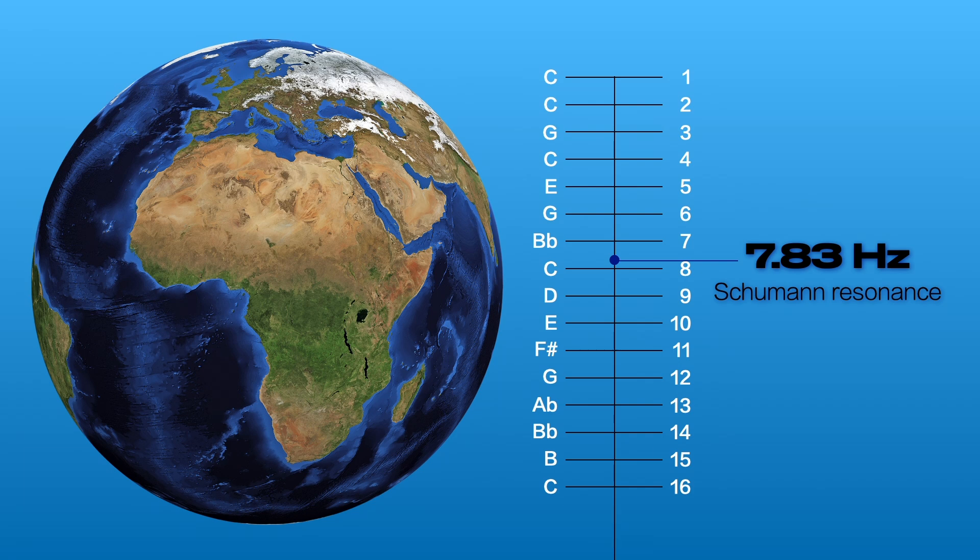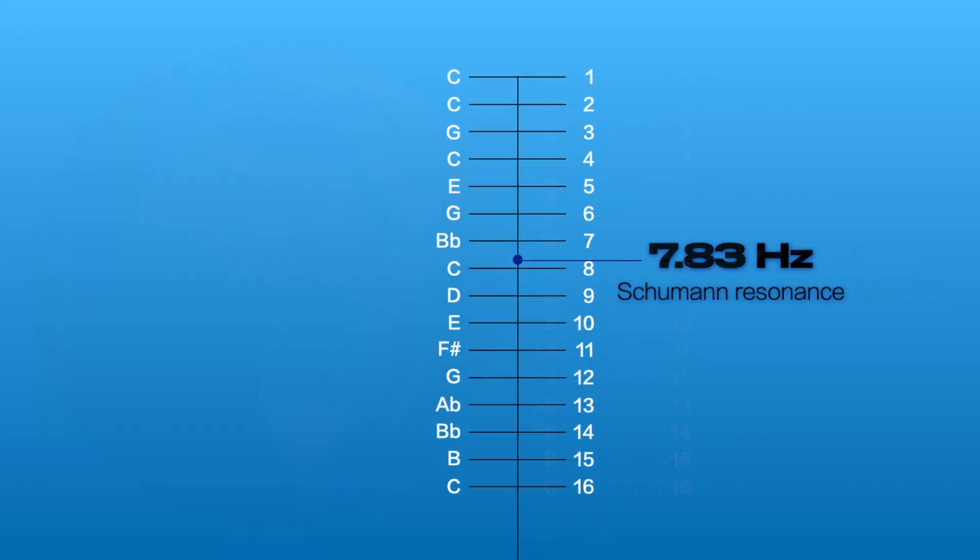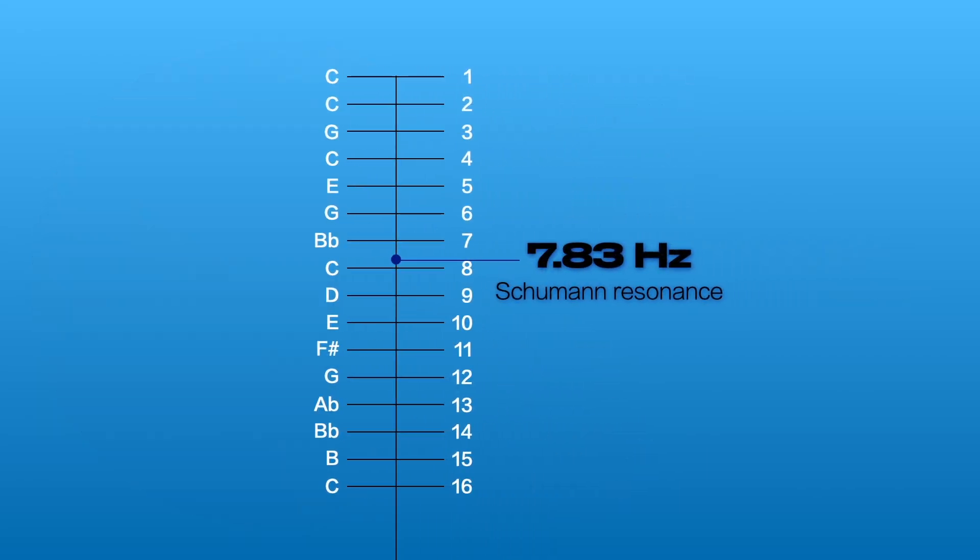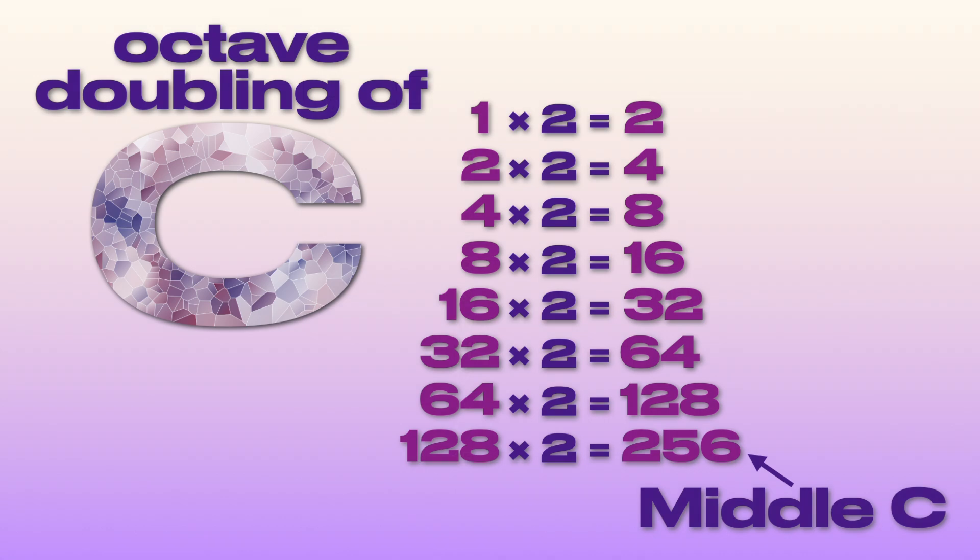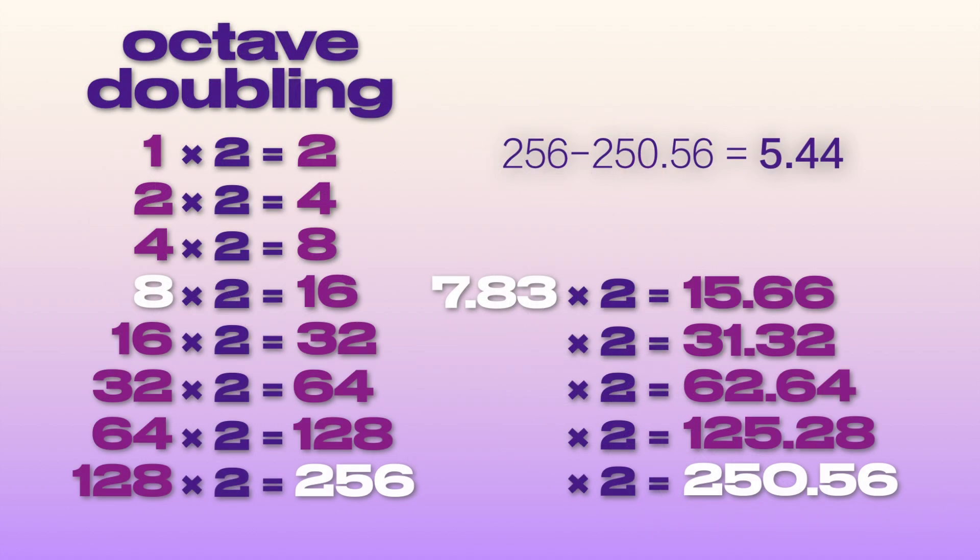The vibration of 7.83 cycles per second is not considered a musical note in the harmonic series. The closest harmonic note would be the note of C at 8 Hz, which scales up to 256 Hz at middle C. If we scale the Schumann resonance up to this octave, the two tones are 5.44 Hz apart and produce an audible beat.